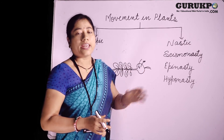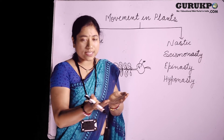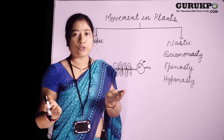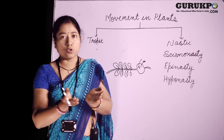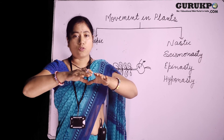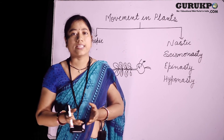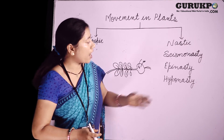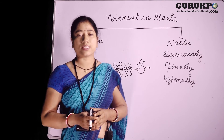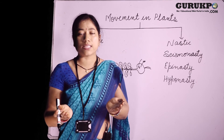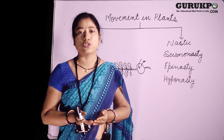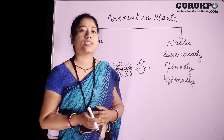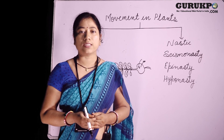Next is epinasty. In epinasty, the upper surface of the plant grows more than the lower surface. Due to this, the plant part bends downward. The example of epinasty is the opening of a flower. Now next is hyponasty. In hyponasty, the lower surface grows more than the upper surface. Due to this, the plant part bends upward. The example of hyponasty is the closing of a flower.